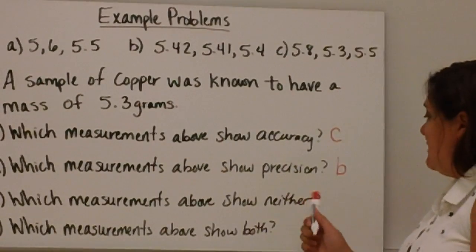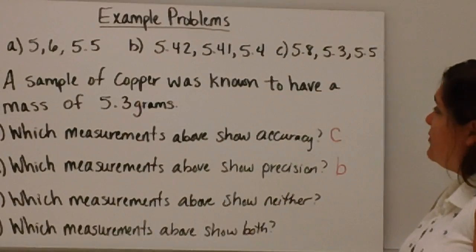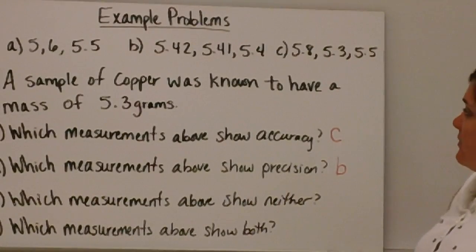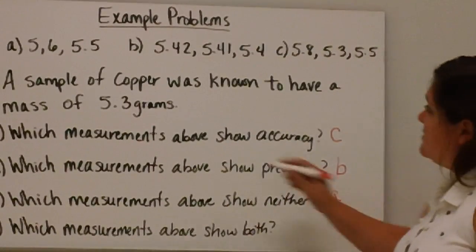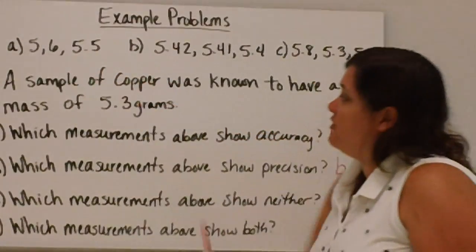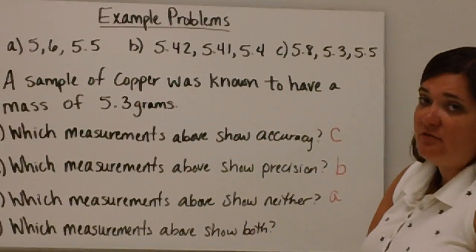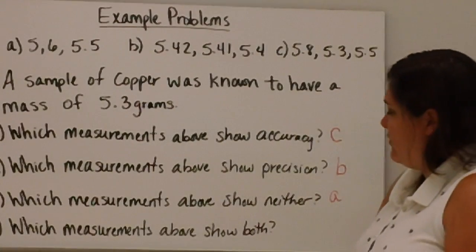Which measurements show neither accuracy nor precision? That would be A, because the measurements are pretty far apart from each other, 5.6 and 5.5, and they're also really far away from the true value of 5.3.